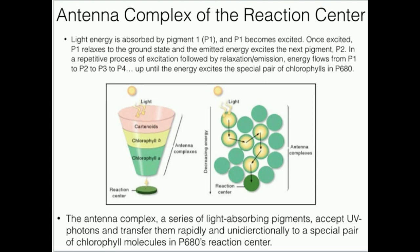It's only until we get to the reaction center that we get an electron transfer. All of these light-green pigments out here — even the ones not involved in this particular chain — are what we term the antenna complex. The antenna complex's function is to transfer energy from the outside of the photosystem directly to the reaction center, and it's very efficient and unidirectional.